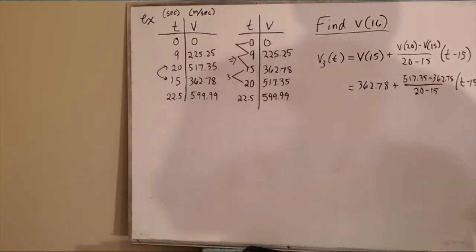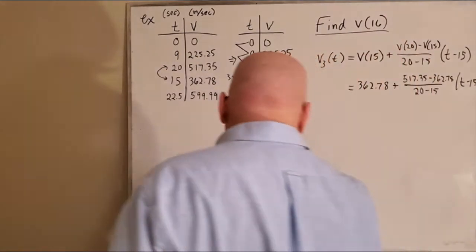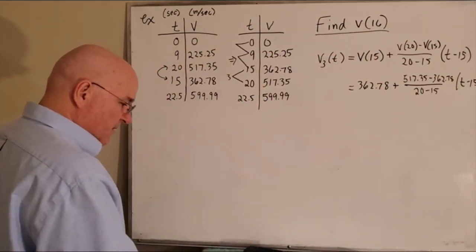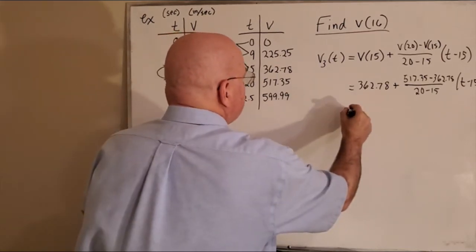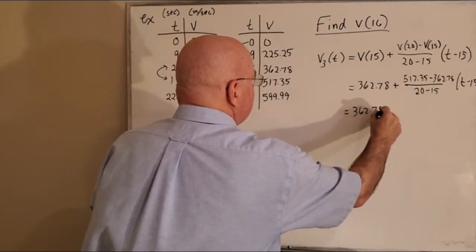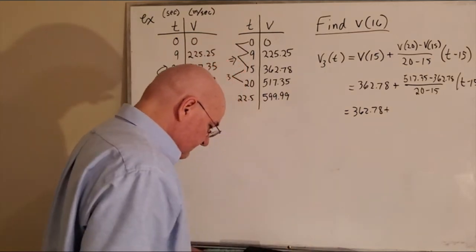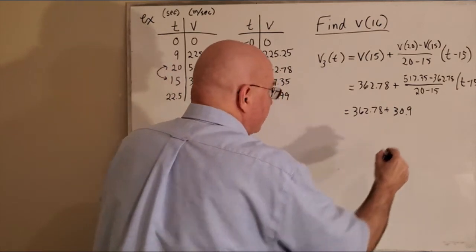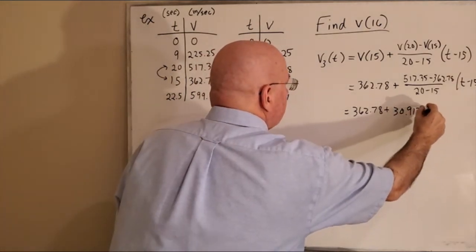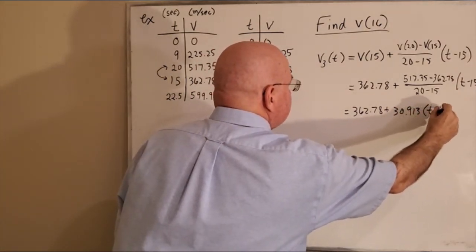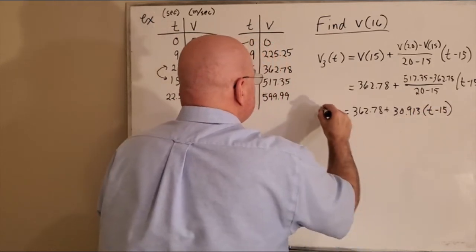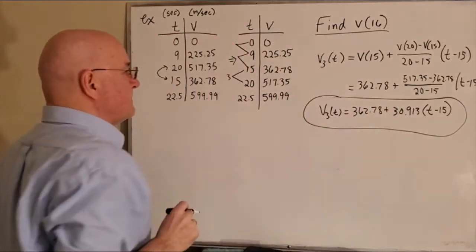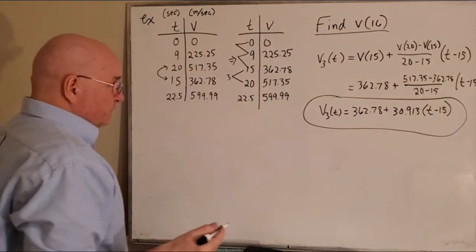That's a little messy, but that's our velocity function. So that's our velocity function, and I've got better numbers for this: 362.78 plus 30.913 times t minus 15.